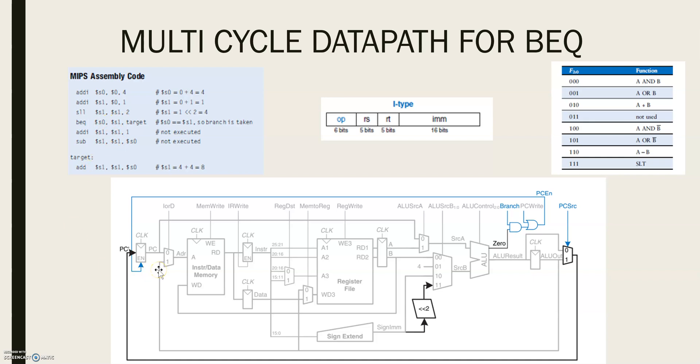So in the case of this BEQ instruction, the instruction is again fetched and two source registers are read from the register file. To determine whether these registers are equal, ALU subtracts these registers and upon a zero result, it sets the zero flag. So in this case, the value of ALU control will be 110 because a subtraction is taking place.